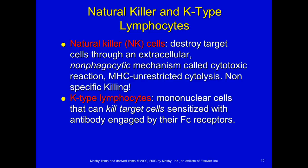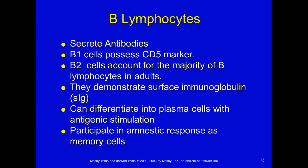You need to know the difference between natural killer cells and K-type cells. Natural killer cells destroy target cells through an extracellular non-phagocytic mechanism called a cytotoxic reaction — it involves MHC-unrestricted cytolysis and nonspecific killing, meaning it will kill anything in its way. K-type lymphocytes are mononuclear cells that can only kill cells that have an antibody attached to them. So natural killer cells can kill anything; K-type cells need an antibody present.